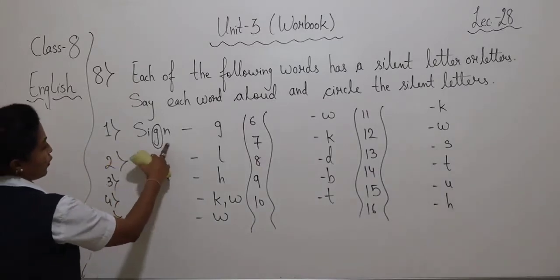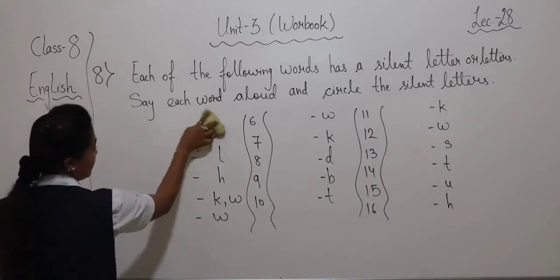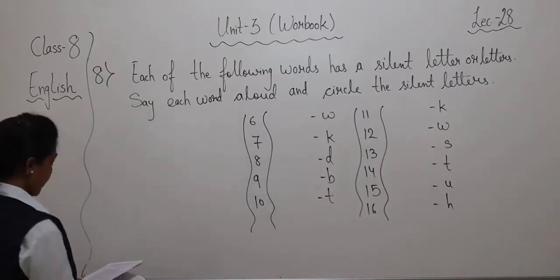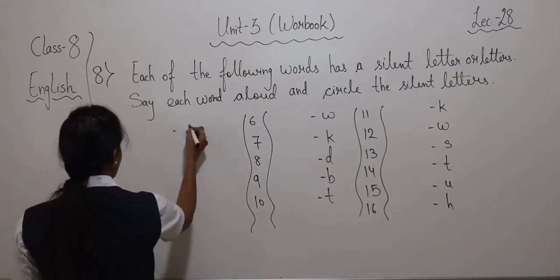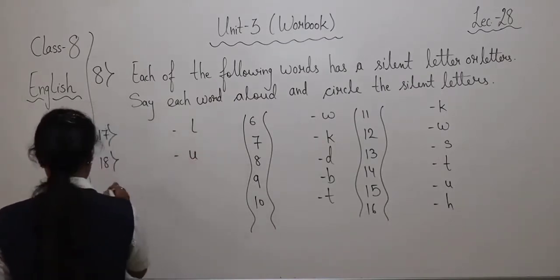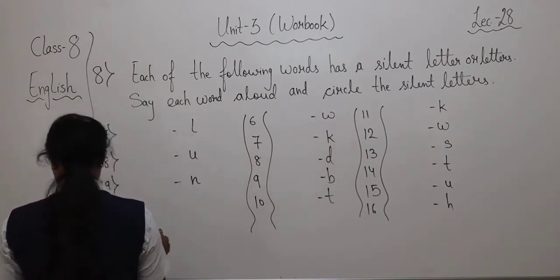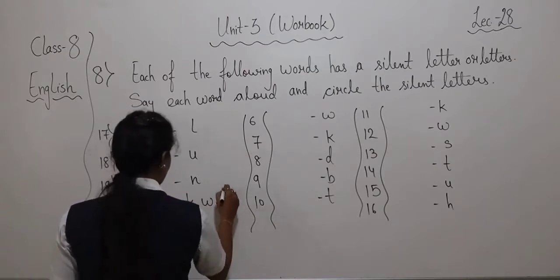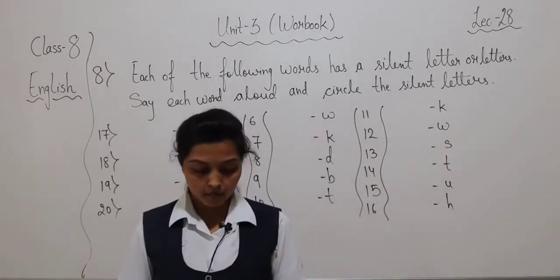Write down the complete word and circle the silent letter. Talking — L. Then building — U. Then condemn and knowledge — K, W, D are silent. Write down the complete word and circle the silent letters.